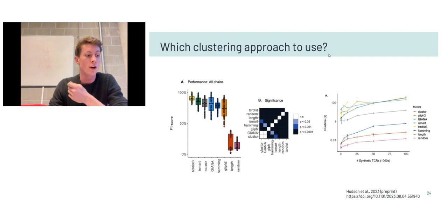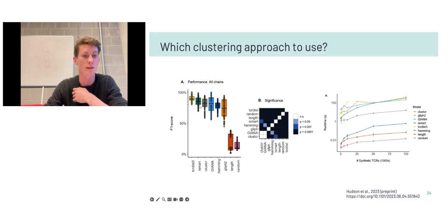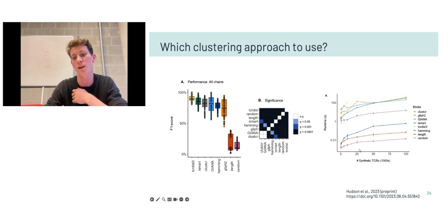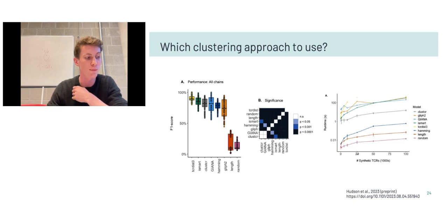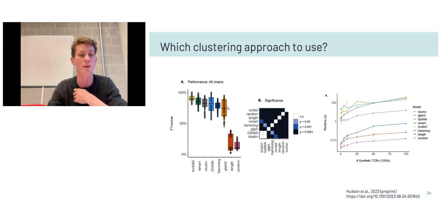For choosing which algorithm to use, I refer to a preprint by Dan Hudson comparing different methods on different epitopes from the VDJDB. There is a clear trade-off: TCRdist-based clustering has very high accuracy but is computationally challenging and becomes intractable for very large data sets. Also clear from this data: simple metrics like Hamming distance are not necessarily worse than highly complex ones such as GLIPH2. So depending on your data set, I would suggest sticking to a simple distance metric, or if you have paired chains available, something like TCRdist.